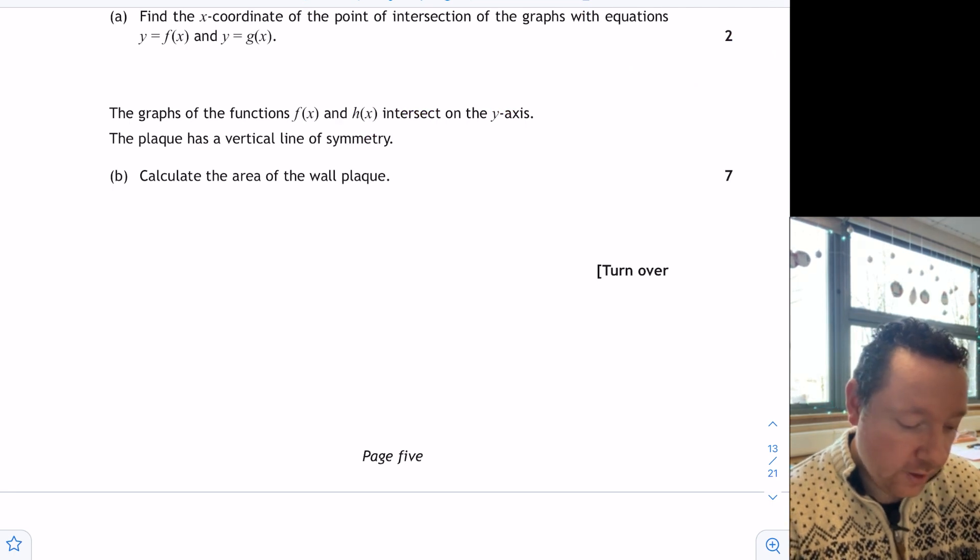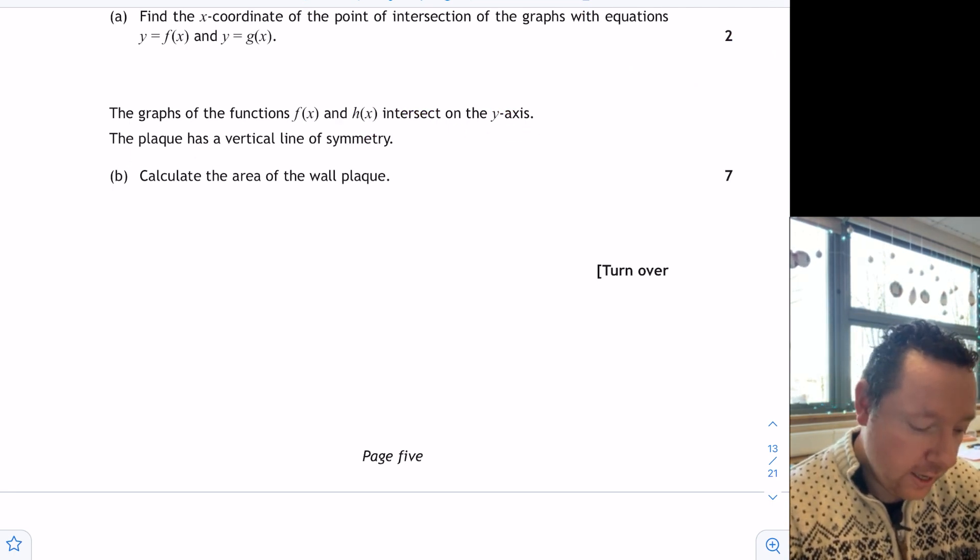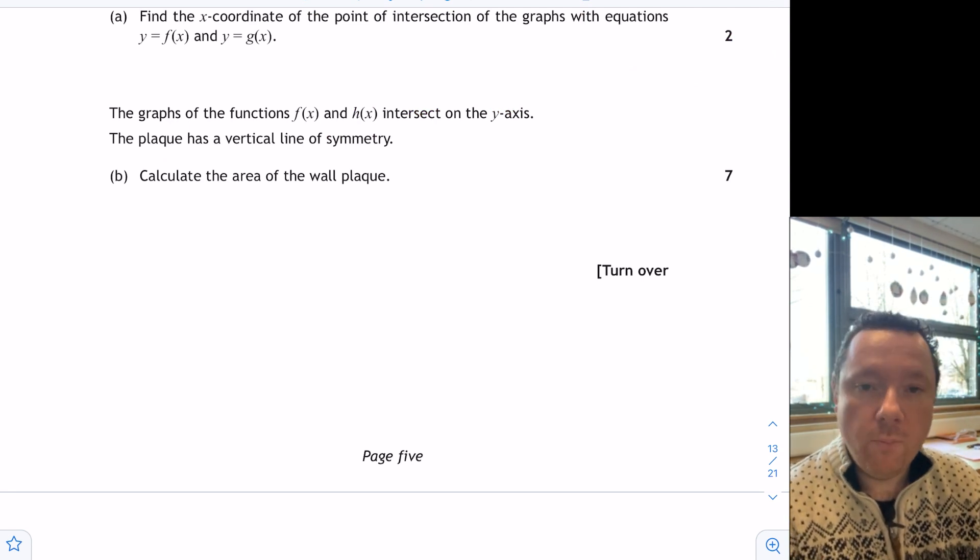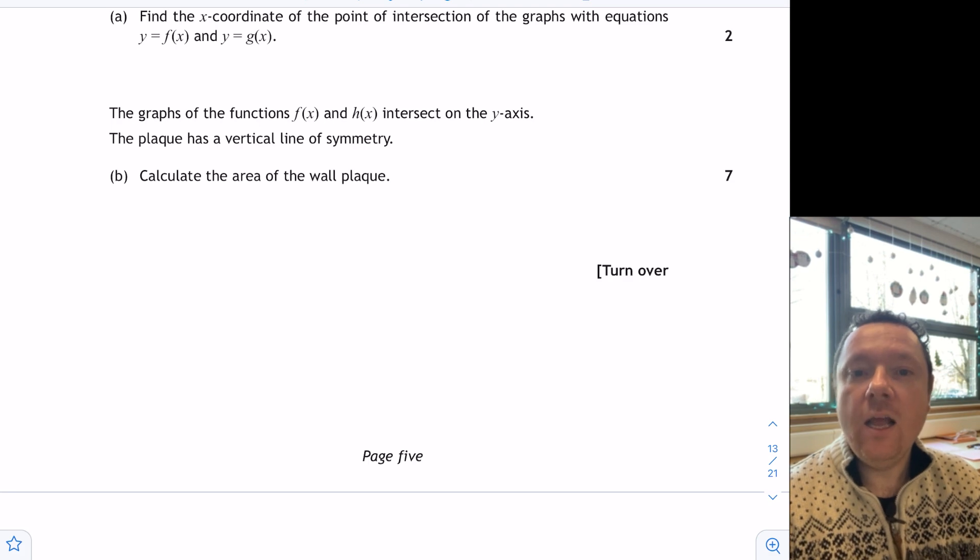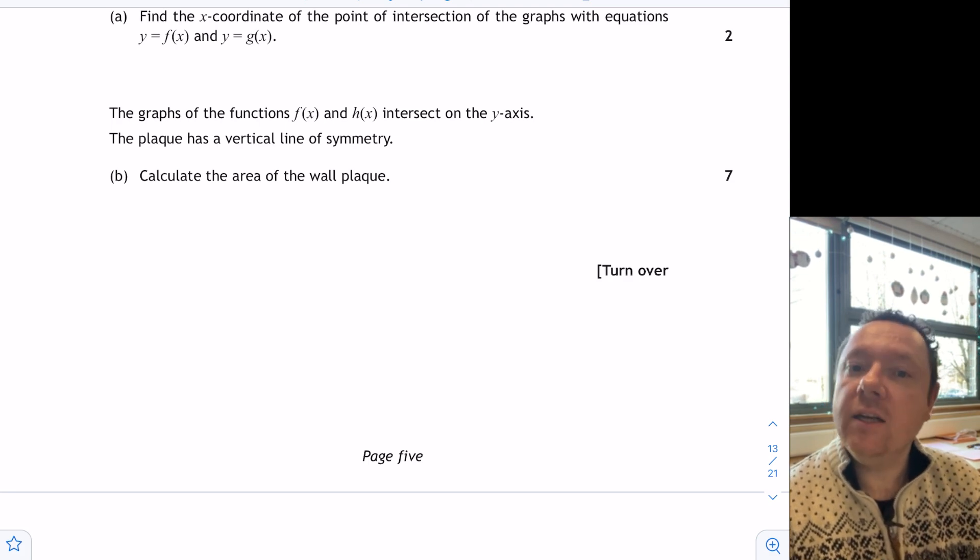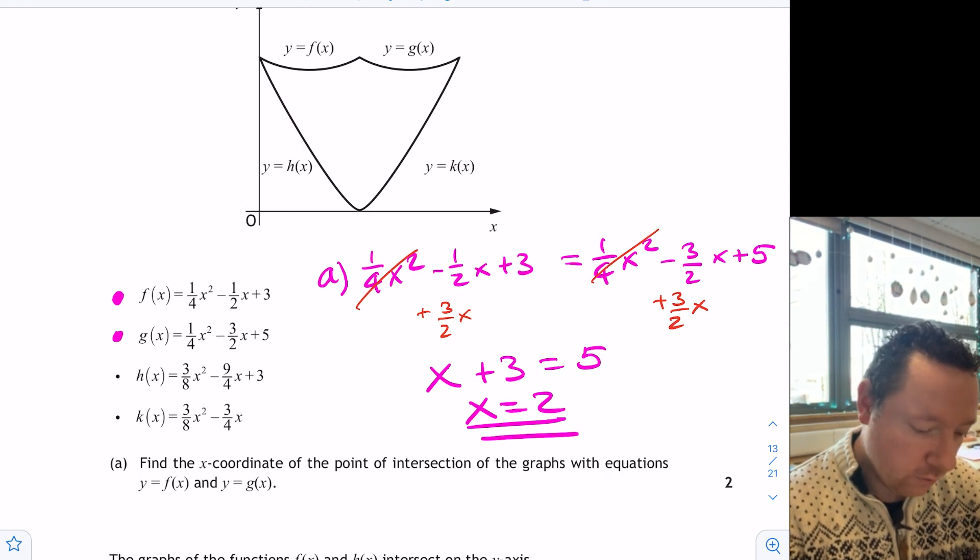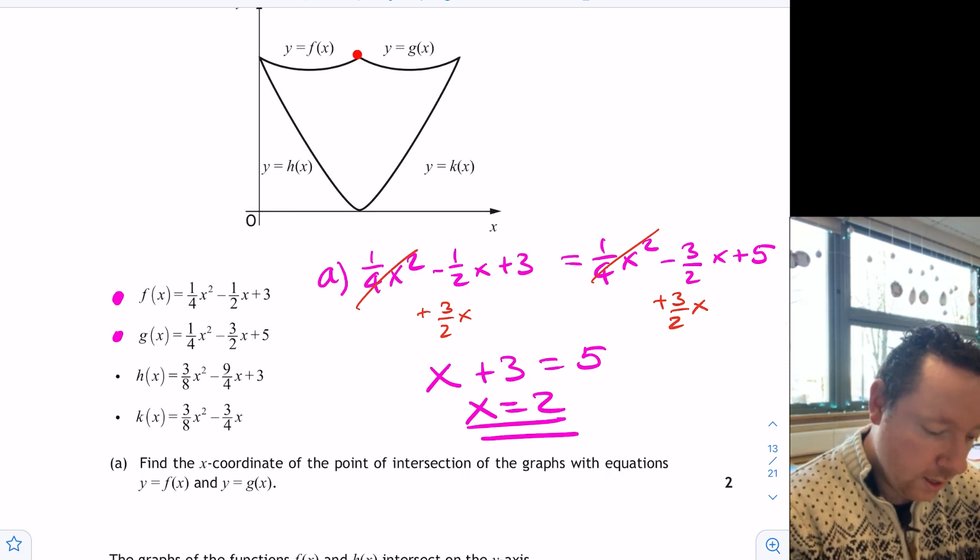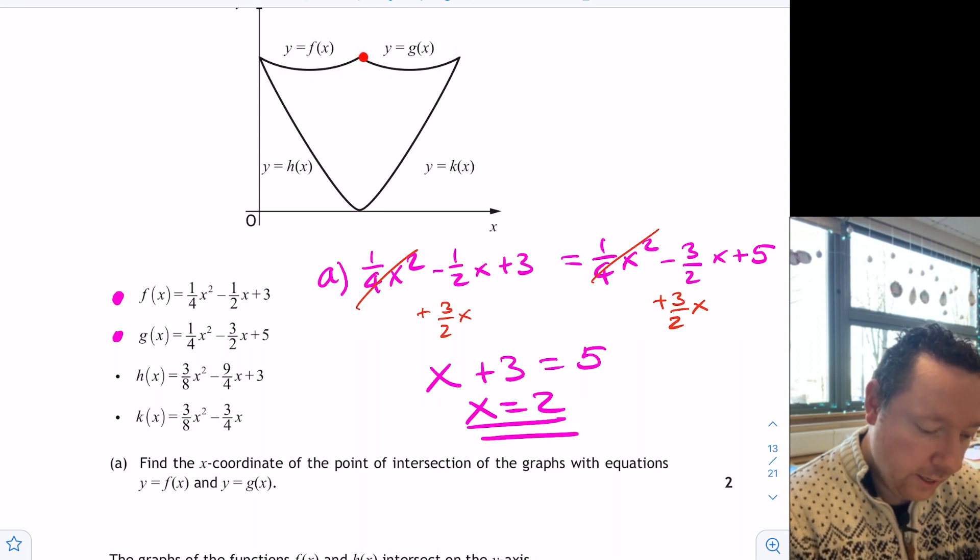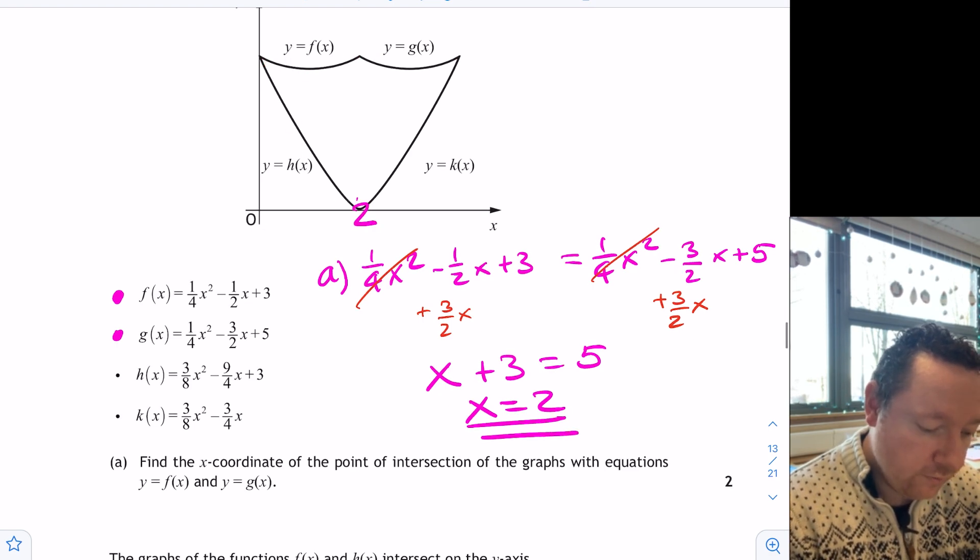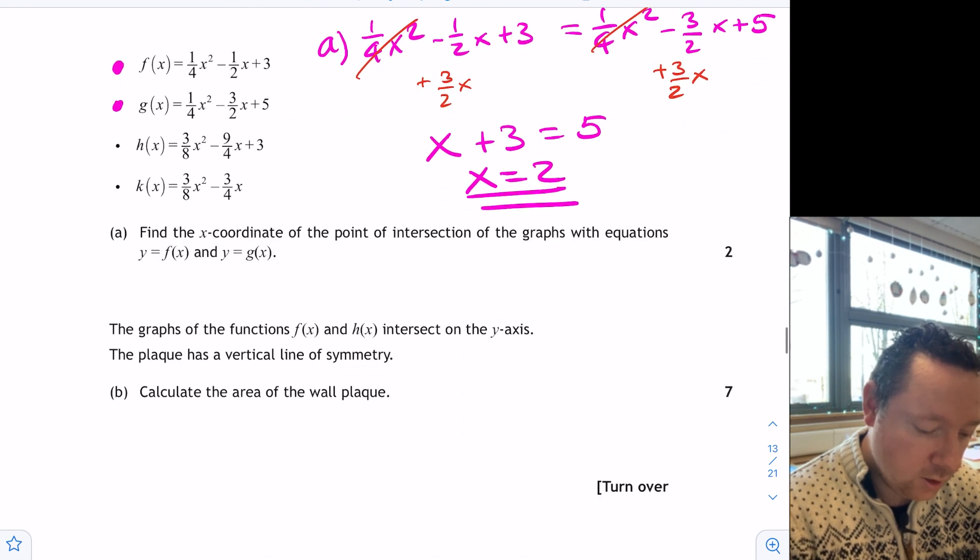Part B says the graphs of f(x) and h(x) intersect on the y-axis. The plaque has a vertical line of symmetry. Calculate the area of the wall plaque. You should know the power word for integration is area, so if it says area you need to integrate and you need to find the two limits. So we've already got our first limit at zero. We need to know this one. Well, this one is going to be the same as this one which you worked out in part A, where these two intersect was two. So that's just two. So I need to do the integral of the upper f(x) minus the lower h(x) between zero and two.